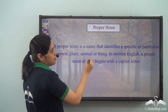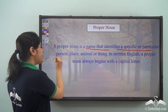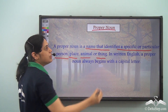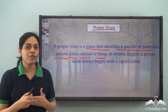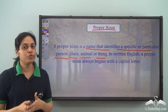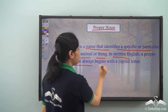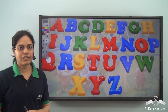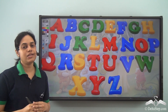A name that identifies a specific or particular person, place, animal or thing is called a proper noun. So words like Red Fort and Gateway of India are called proper nouns — they are specific names, and those words are proper nouns. In written English, a proper noun always begins with a capital letter. We always write proper nouns with capital letters.